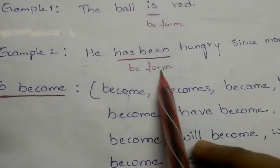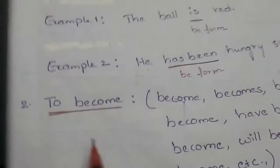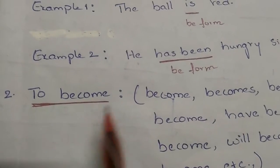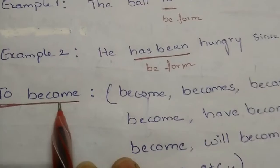Now we have one more type of linking verb, that is, to become. If we use become in a sentence as a main verb, then it acts as a linking verb.